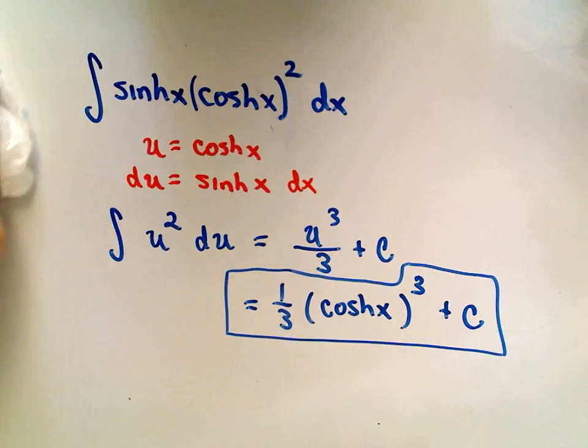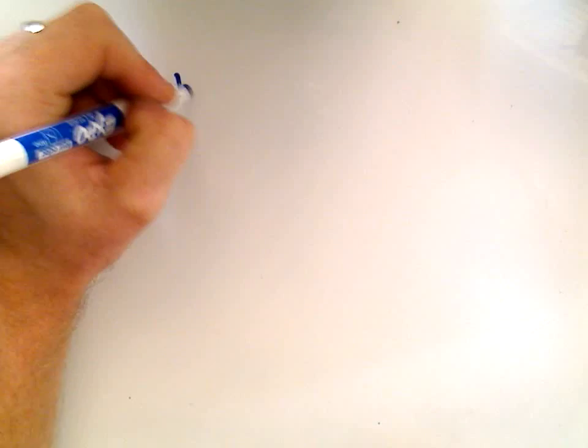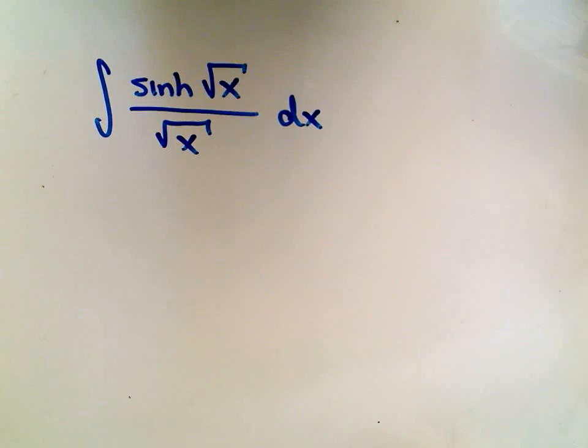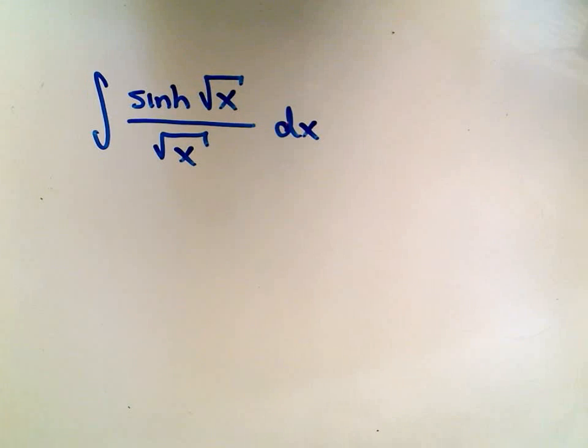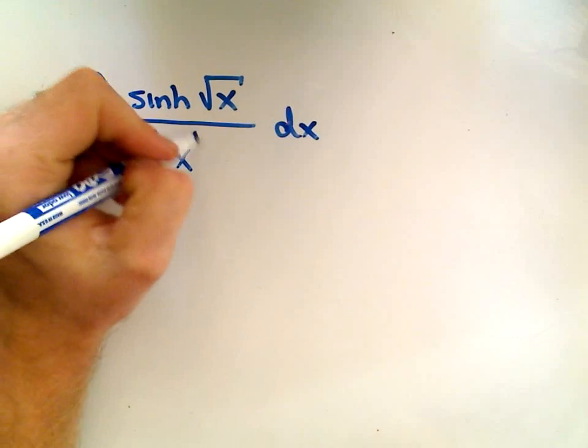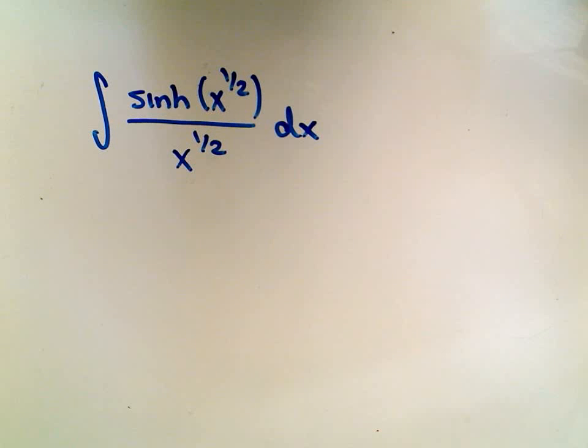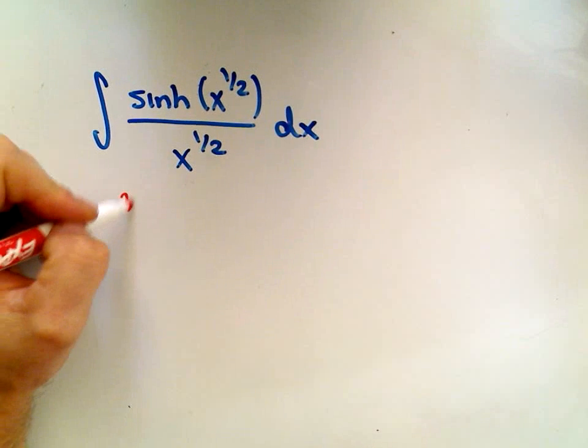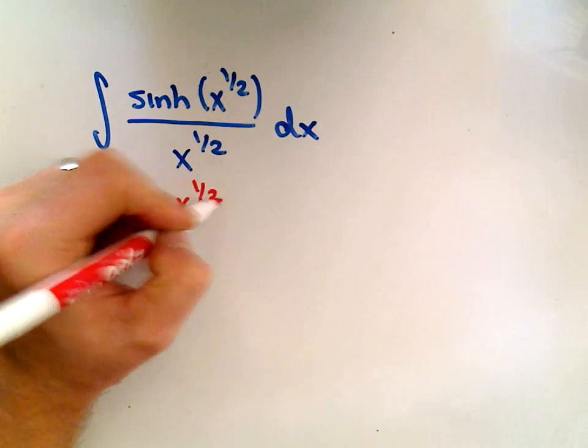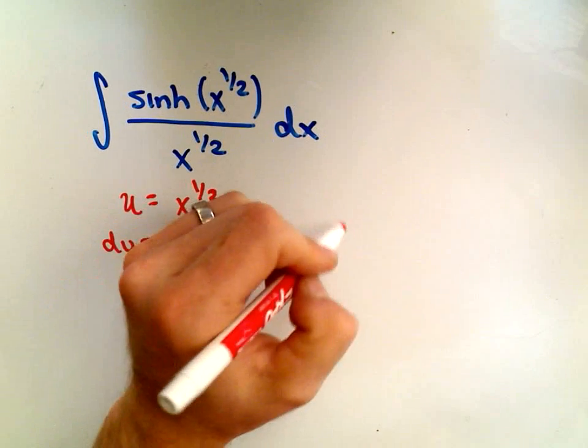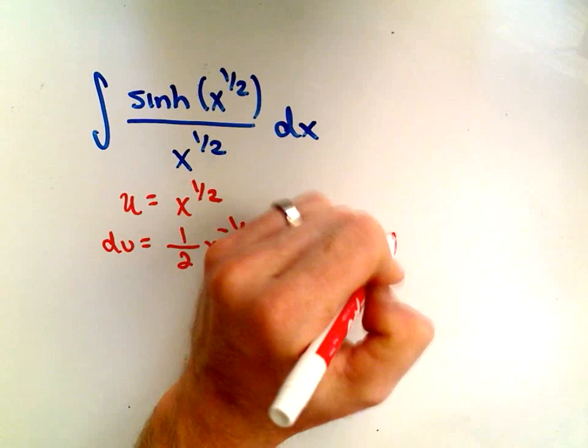Let's do a couple others. Suppose we have hyperbolic sine of square root of x over square root of x dx. When I have these, I like to rewrite my square roots as exponents. So x to the one-half. I think this is just going to be another u substitution problem. If we let u equal x to the one-half, the derivative of that will be one-half x to the negative one-half, or equivalently one over two square root of x dx.